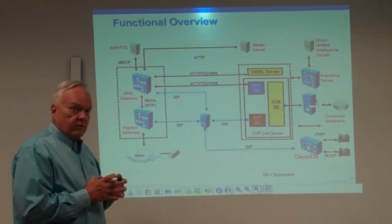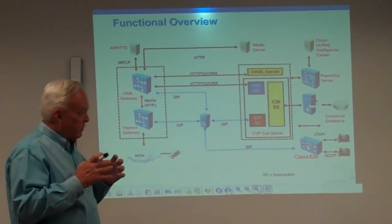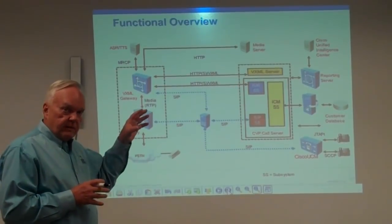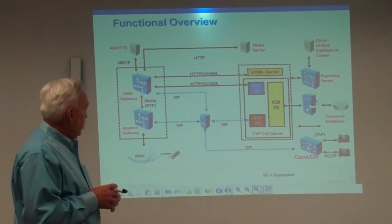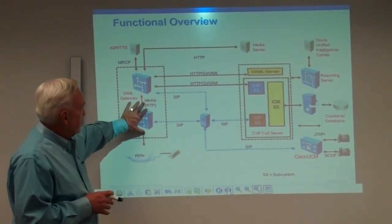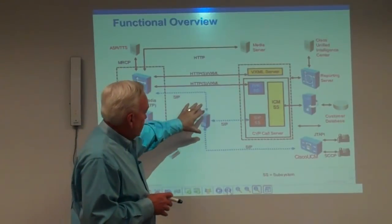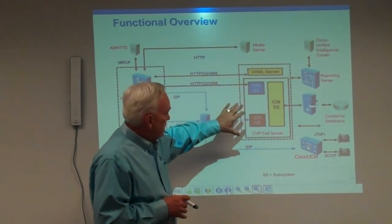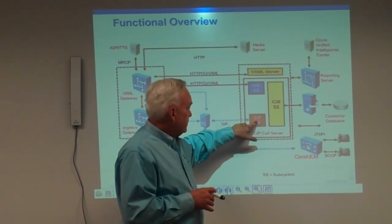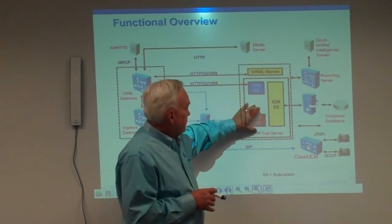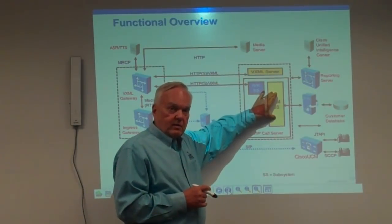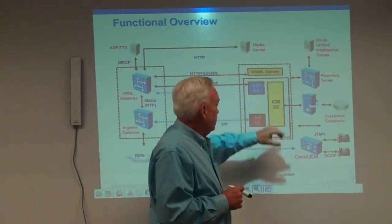This is a functional overview of what we're about to speak about — not an attempt to talk about the call flow itself, just to tell you about the pieces that exist in the call flow. We initially have a PSTN where a call comes in, an ingress gateway to accept that call, a proxy server, and a CVP call server with three necessary services: a SIP subsystem, an IVR subsystem, and an ICM subsystem. We'll get into excruciating detail about what each one of those does in a little bit.